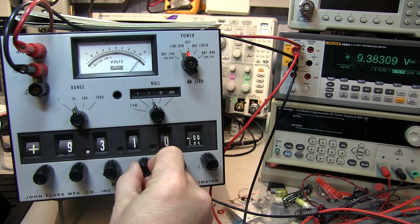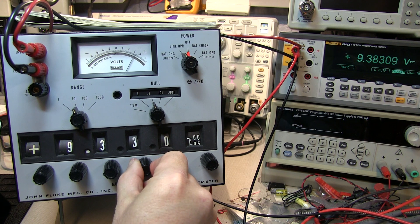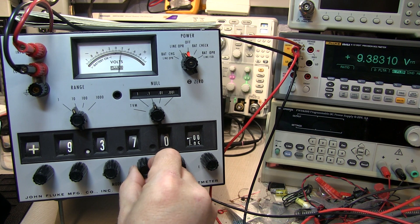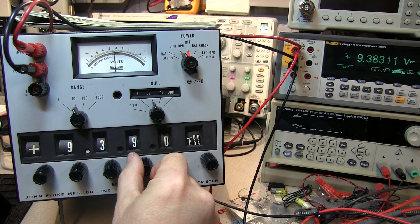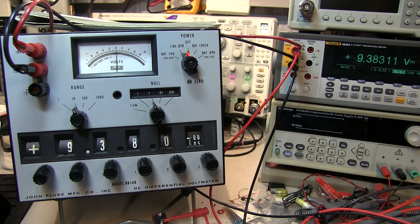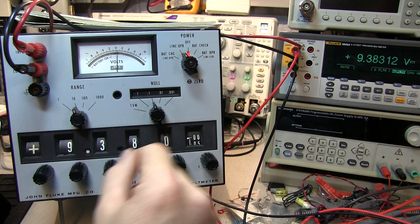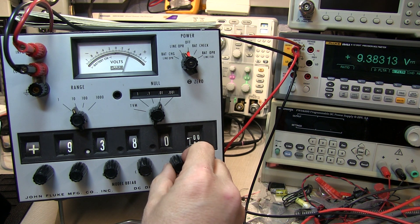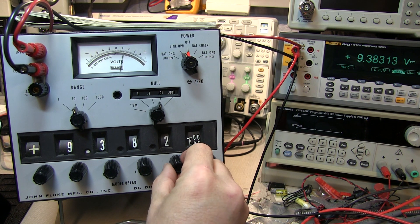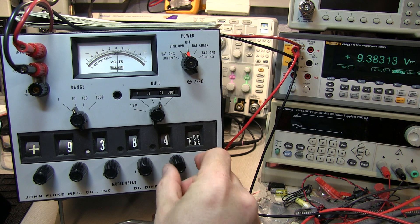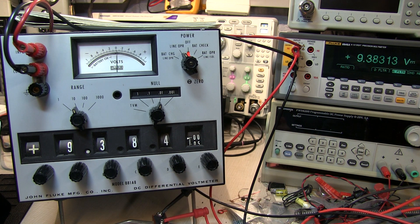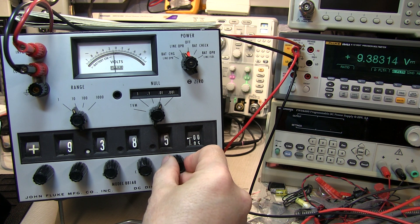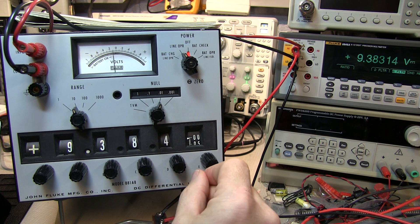Now we can see the deflection go the other way and work our way back up on the next digit to try and get close to zero. We went too far there so we'll back up one. Now the deflection is very small again so we can bring ourselves down to the next null position. Certainly not a quick or efficient way of measuring voltages, but you can see how quickly we can reach a null position. We went too far, let's bring that back.